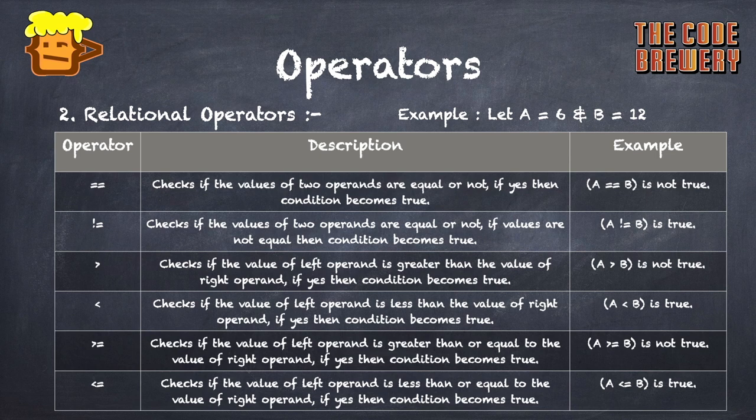The greater-than operator checks whether the left operand is greater than the right operand; if yes, the condition becomes true — A greater than B is not true. The less-than operator checks if the left operand is less than the right operand; if yes, the condition becomes true — A less than B is true.